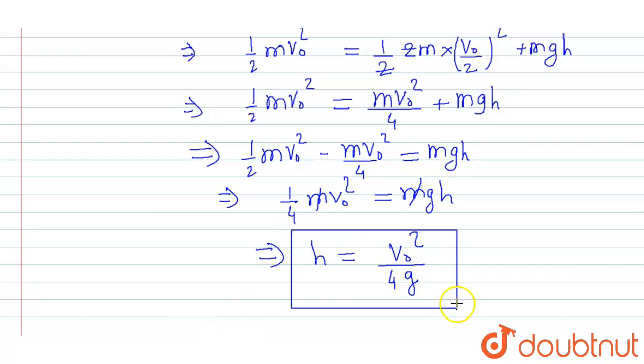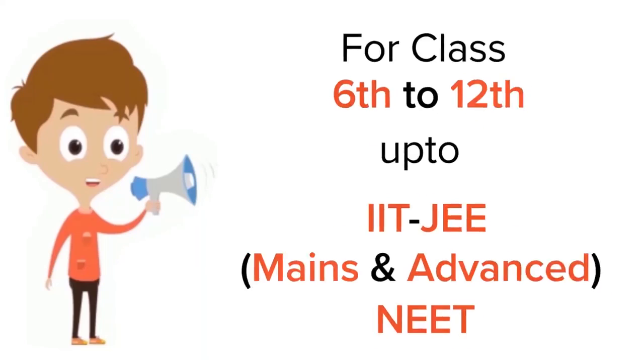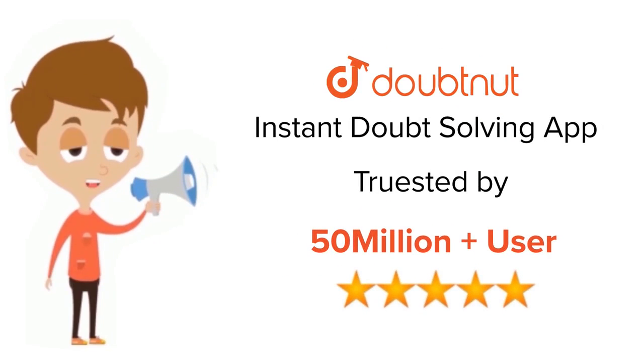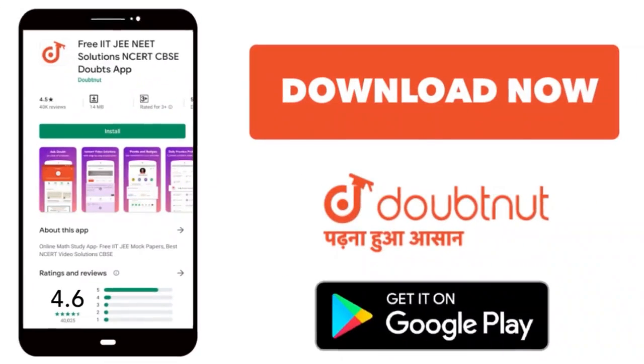This is the required answer, that is the height attained by the bob. For Class 6 to 12, IIT-JEE and NEET level, trusted by more than 5 crore students, download DoubtNet app today.